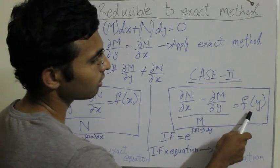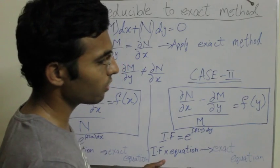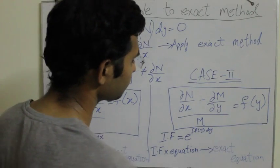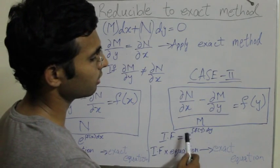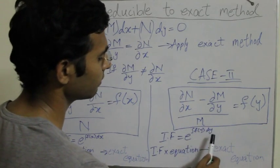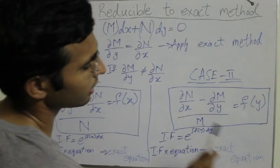The partial derivative of N with respect to x minus the partial derivative of M with respect to y upon M must give you a function of y only. So you have a term over here that would have no variables except y. The rest of the procedure is same. Integrating factor is equal to e to the power integral f of y dy. Multiply that to this equation and make it an exact equation.